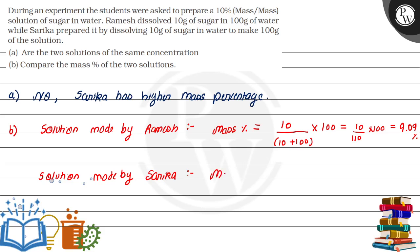For Sarika's solution, mass percentage equals 10 divided by 100, because 10g of sugar is dissolved in water to make a total of 100g of solution, multiplied by 100. So it's 10 percent.